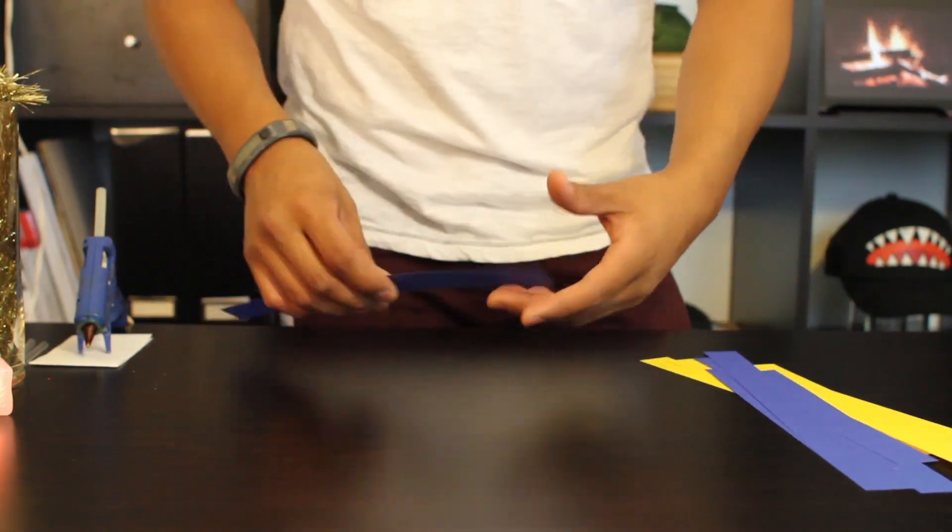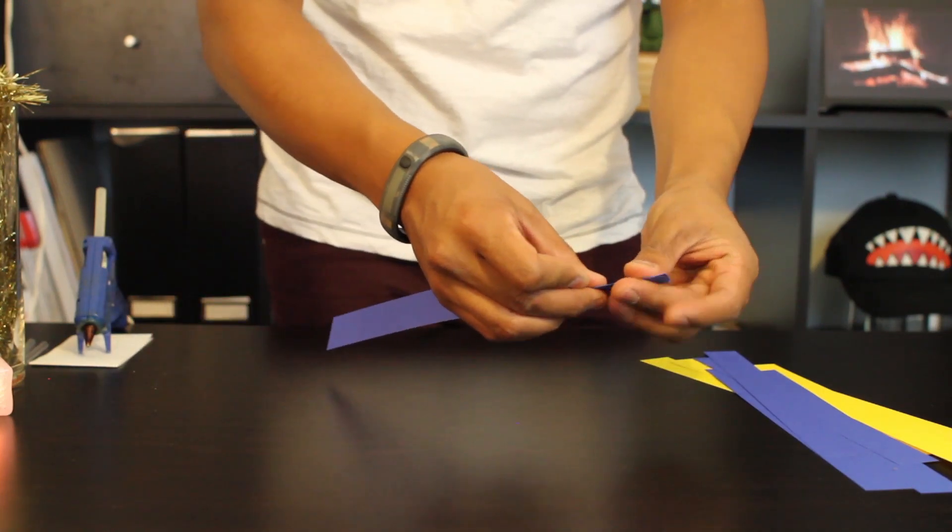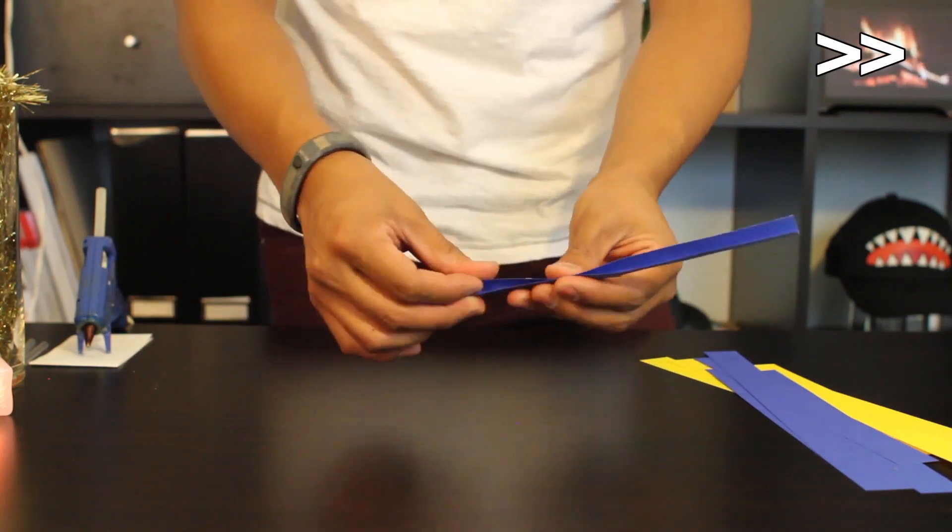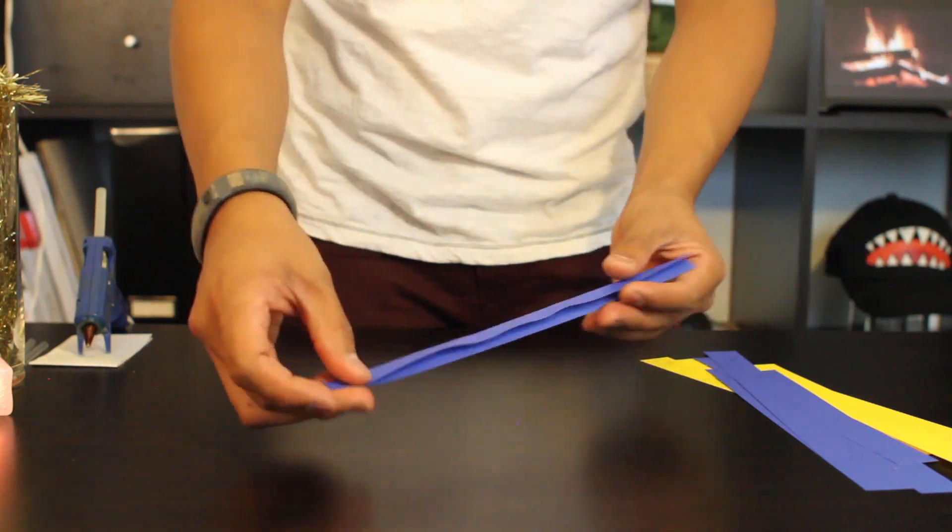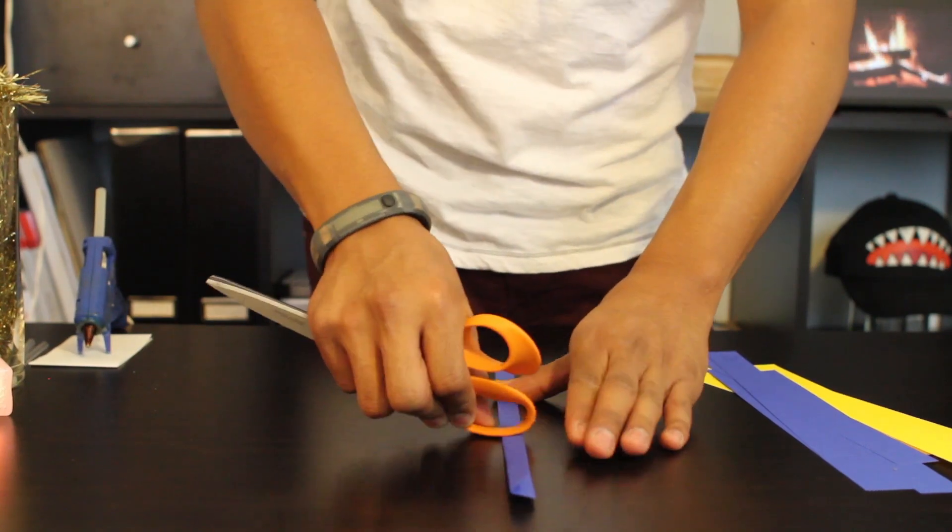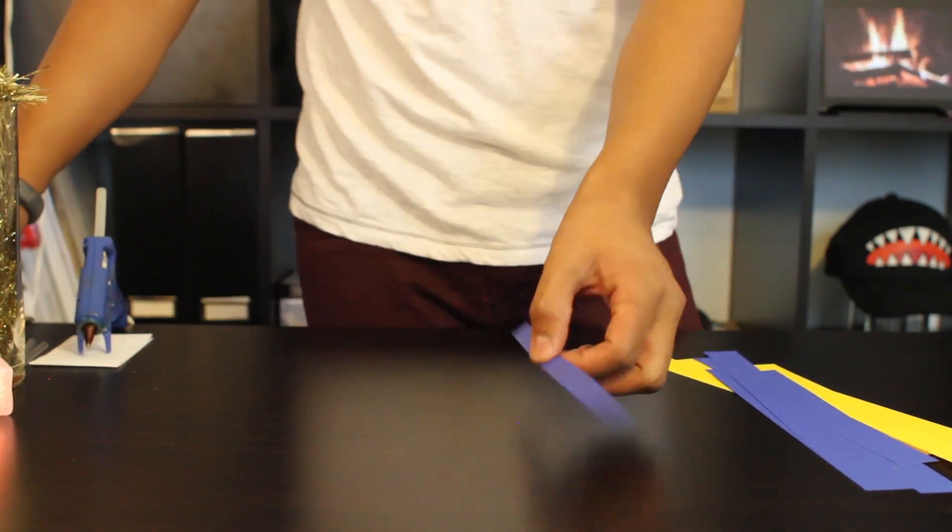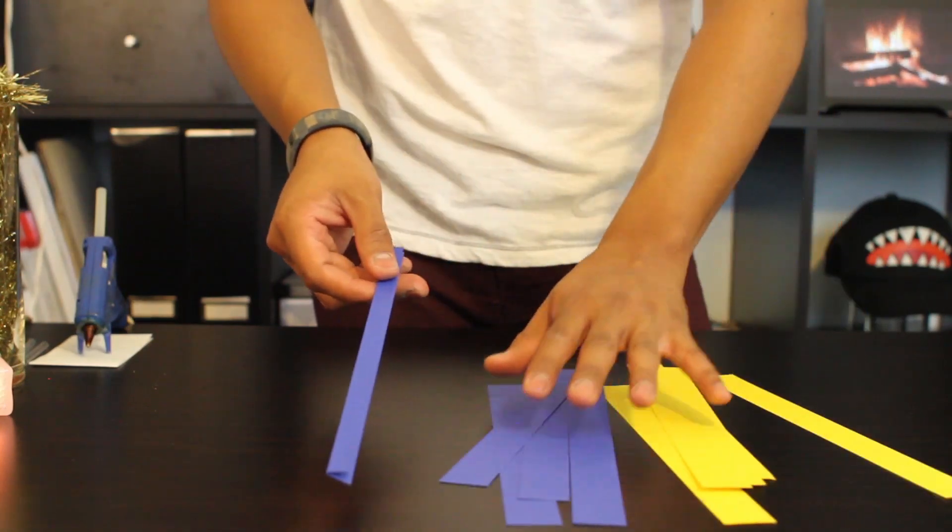First, take your first strip and fold it in half. Make sure the edges are creased so that your star will be very neat. Repeat this on all 10 of your strips.